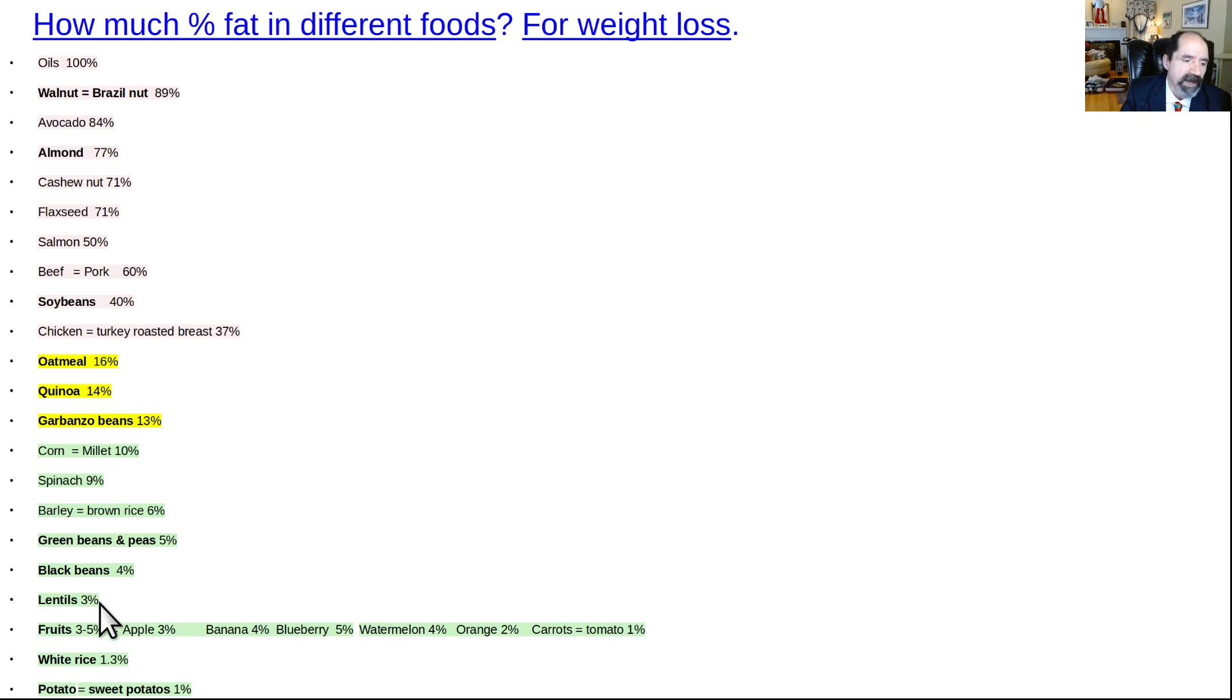The lentils are the lowest in fat for the beans at about 3%. All the fruits are almost all about 3% to 5% fat. So these are, you want to be skinny? This is how you can lower your fat intake. Fruits, white rice, potatoes, and sweet potatoes. And if you have to choose other beans, the black beans and the green beans are also quite low in fat.